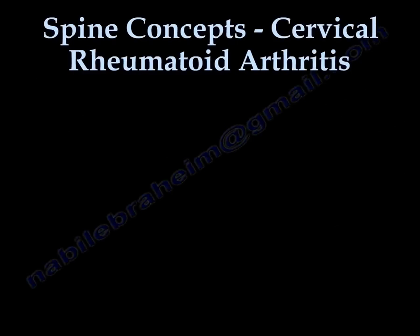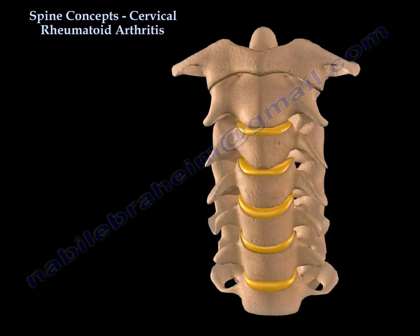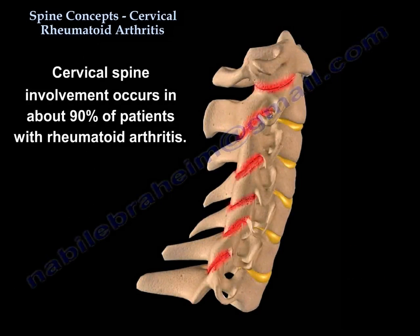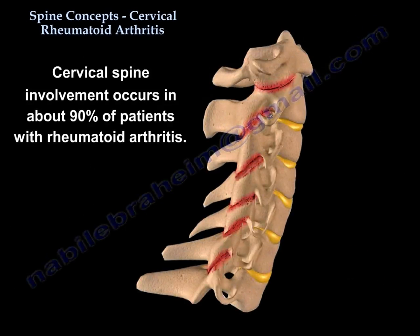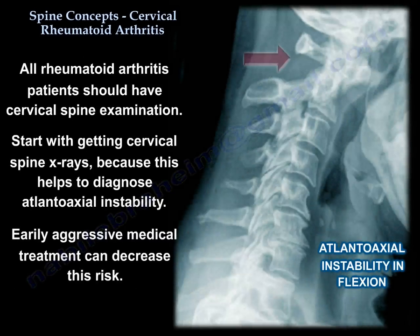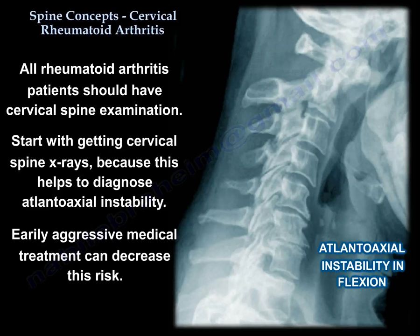Cervical spine involvement occurs in about 90% of patients with rheumatoid arthritis. All rheumatoid arthritis patients should have a C-spine examination, starting with C-spine x-rays, which help diagnose atlanto-axial instability. Early aggressive medical treatment can decrease this risk.